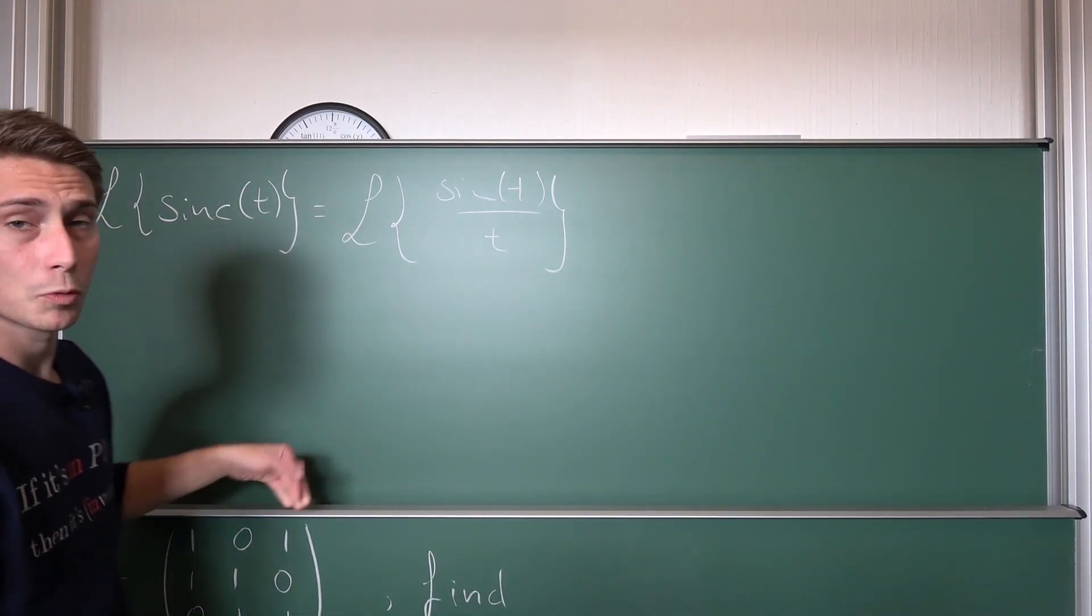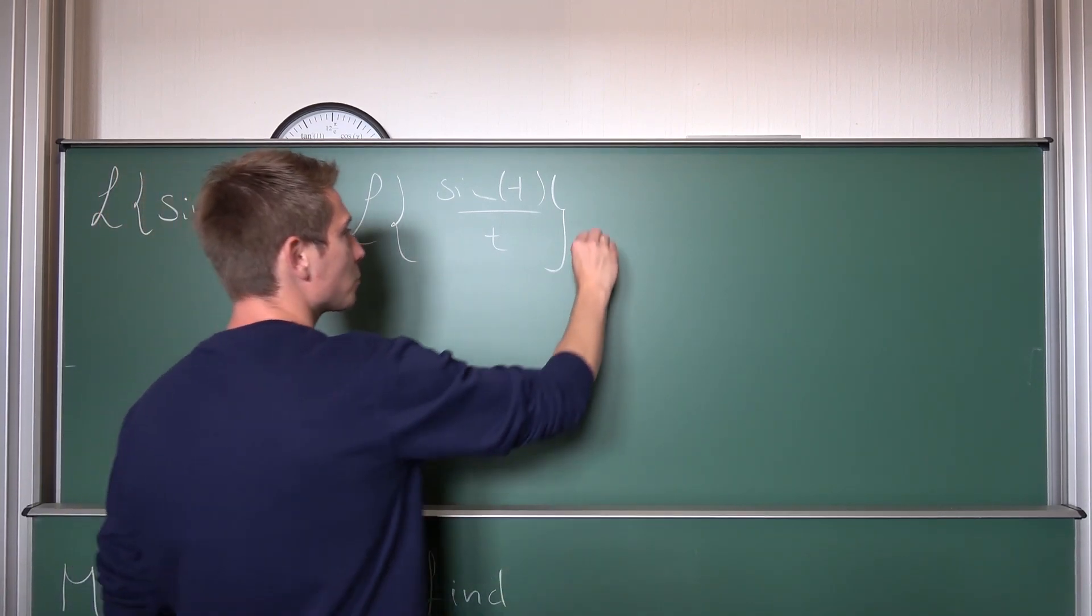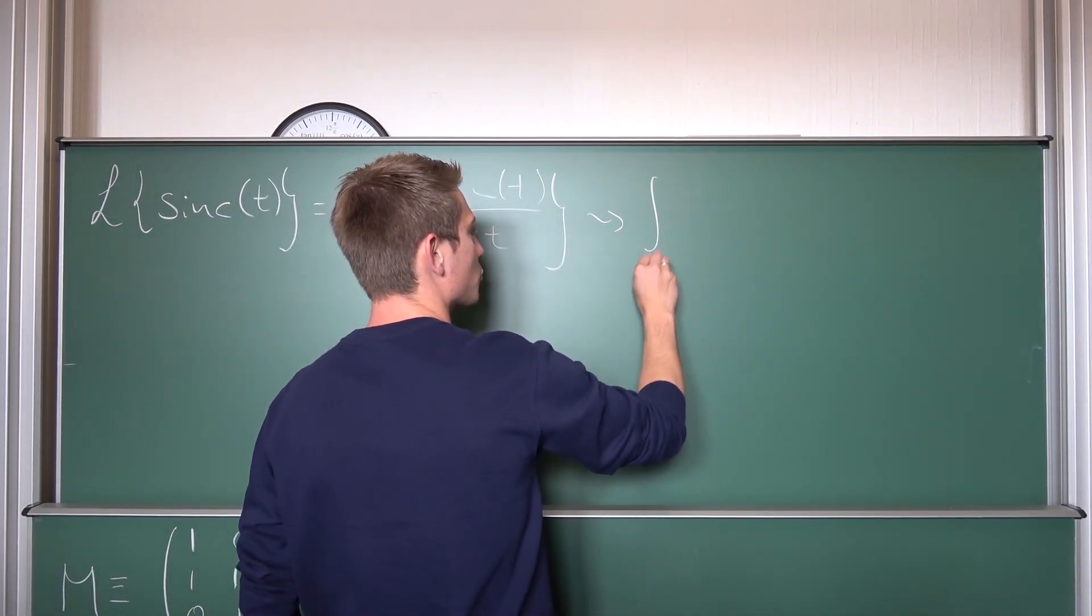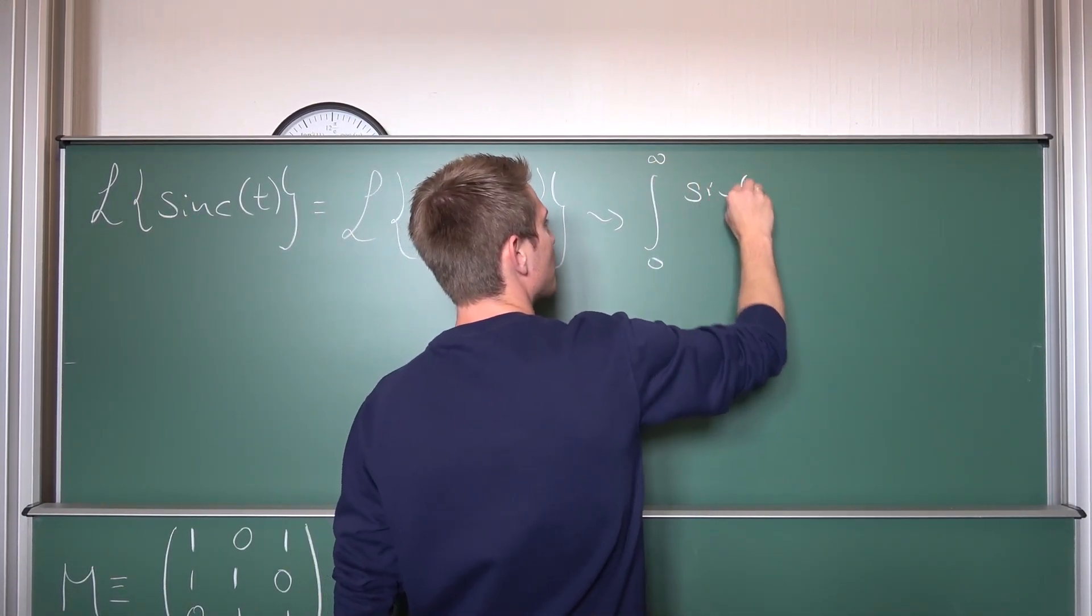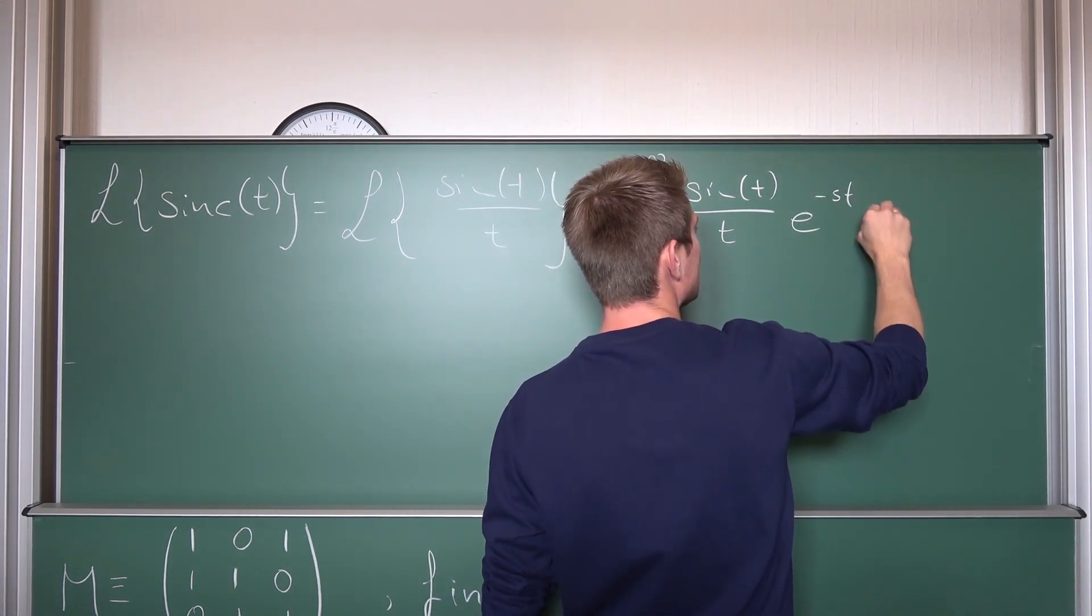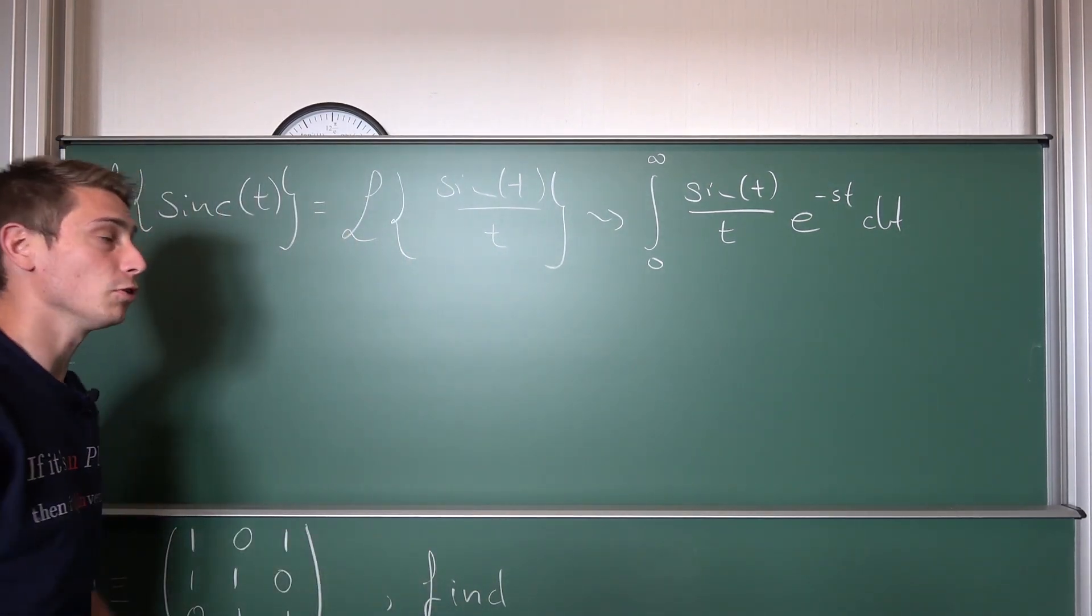And now we are going to apply what we have derived before. At first I would like to rewrite what the Laplace transform of this expression actually is. This is nothing but the integral from zero to infinity of sine of t over t times e to the negative st, integrated with respect to t. And that's what we need to solve right here.